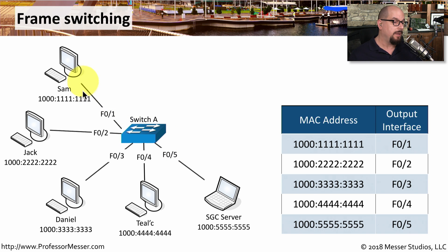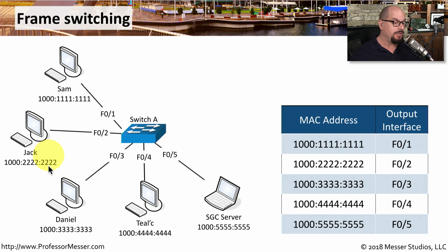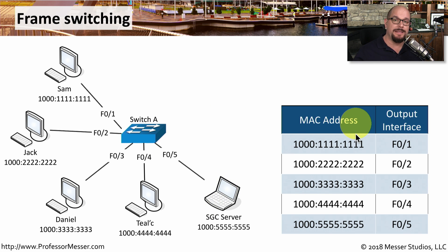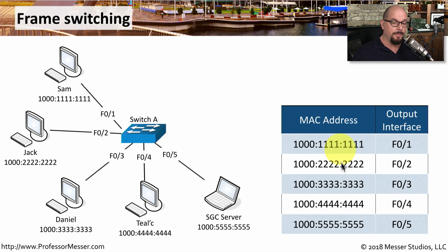We have five devices plugged into this switch: Sam, Jack, Daniel, Tealc, and the SGC server. Of course, each one of those devices has its own unique MAC address associated with each individual device. Inside of the switch is a table that contains information that this switch has gathered over time. This table has a list of all of the MAC addresses that it has seen, and a list of all of the interfaces that are associated with those MAC addresses.